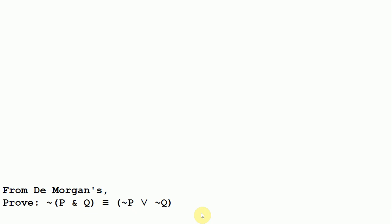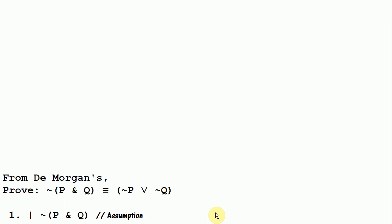Now we're going to do a proof for: the negation of p and q is equivalent to not p or not q. We're going to start by assuming what we have on the left hand side, not p and q, and we want to prove not p or not q. One way we might try to prove not p or not q is through conditional proof, where we would assume p and try to show not q. But that might be a little difficult to do here, because even if we had p, we wouldn't be able to do much to get not q out of it. So we're going to use indirect proof instead.